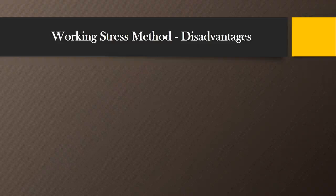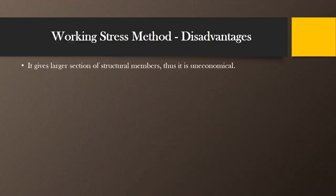Let us discuss the disadvantages of working stress method. The larger size of sections, which was discussed as an advantage, is also a disadvantage, because we have to use more material to obtain the large size of sections. This unnecessarily makes the structure uneconomical. In limit state method we get much smaller sections compared to what we obtain in working stress method, so larger section sizes are a disadvantage for the working stress method.